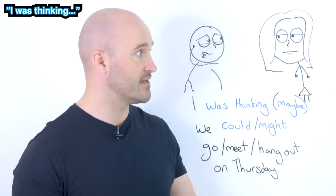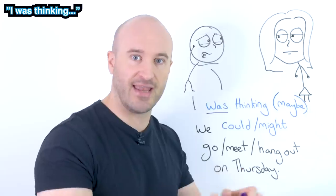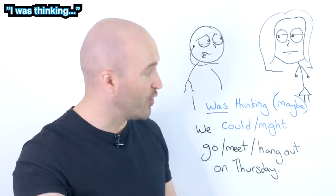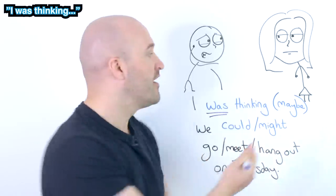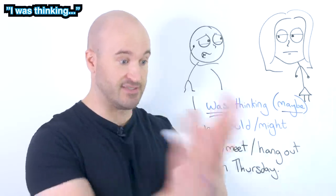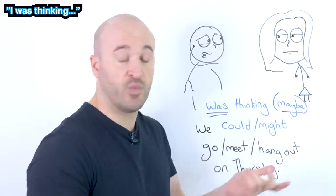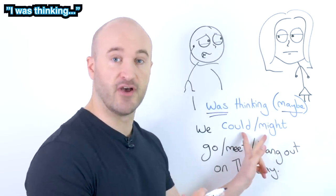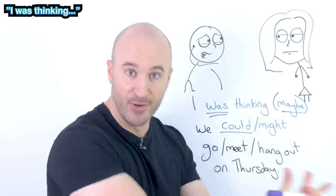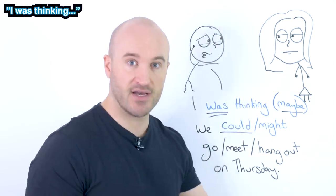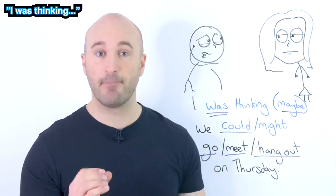'I was thinking maybe we could hang out on Thursday.' Notice that's past tense — 'I was thinking' — yes, you're still thinking now, but it's an idea you had. So it's really common to use that in the past. 'I was thinking maybe...' — it's just a bit less direct, it adds a little bit more friendliness. Also: 'we could' or 'we might' — those are the most common modal verbs. 'I was thinking we could...' — again, because it's less direct, you could also use this structure to arrange a business meeting.